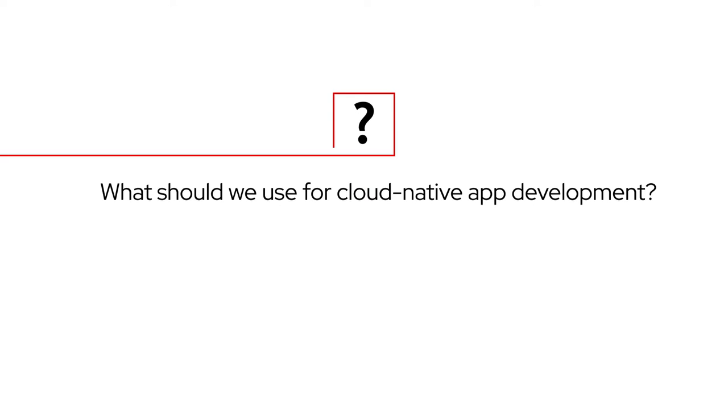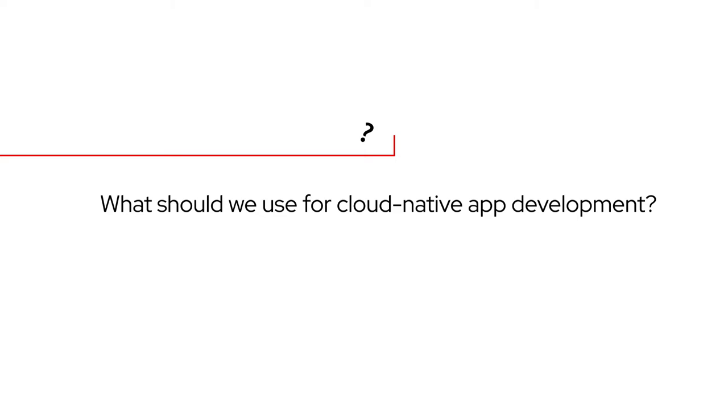Some key things to keep in mind are that the platform should be equipped with features such as automation to save developers time. It should be able to run consistently across different infrastructures — on-prem, across the cloud, at the edge. Very importantly, it should also be able to integrate with a lot of third-party services.